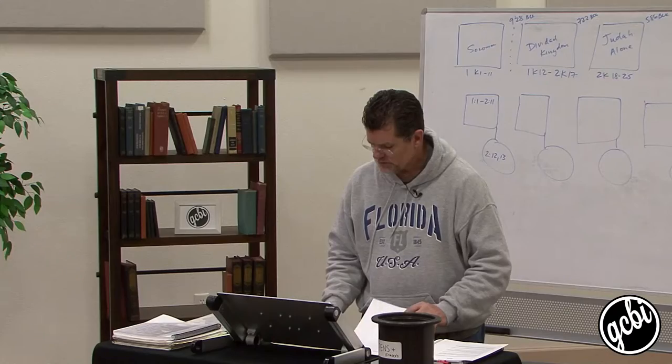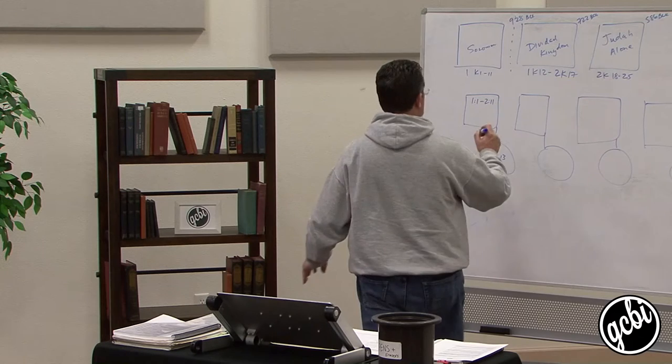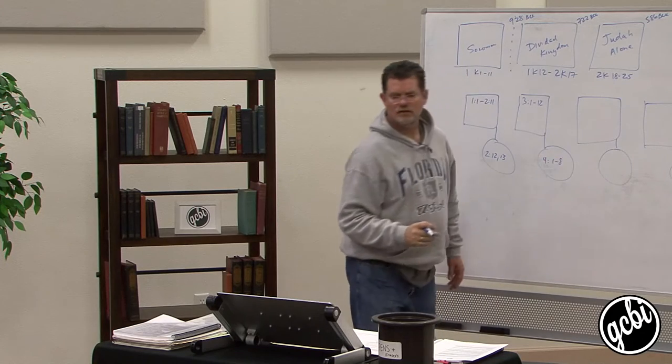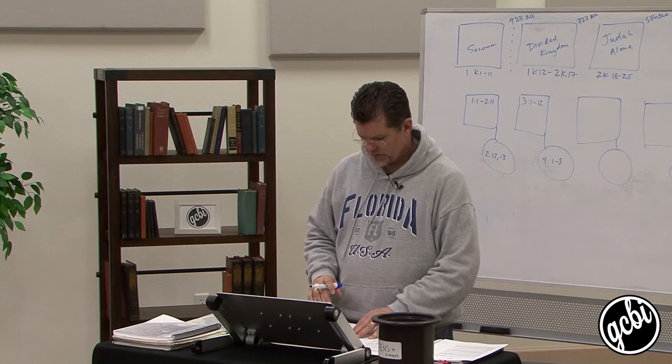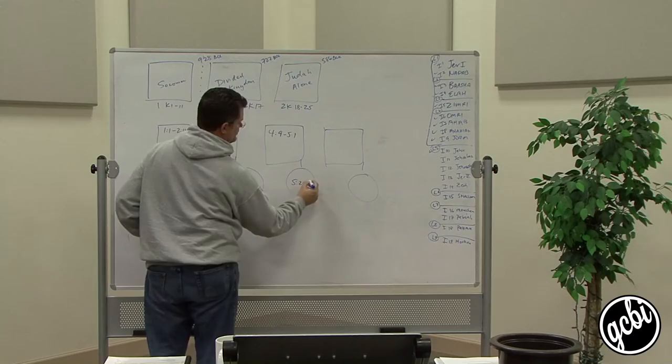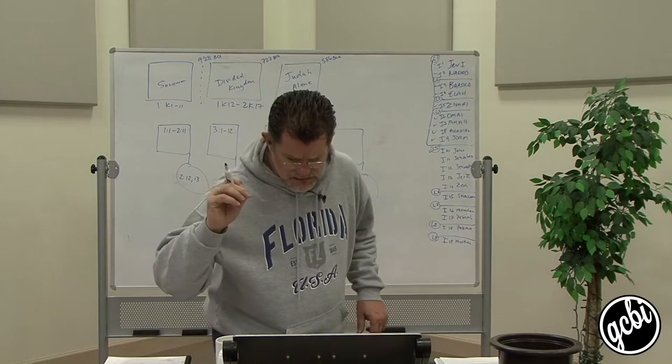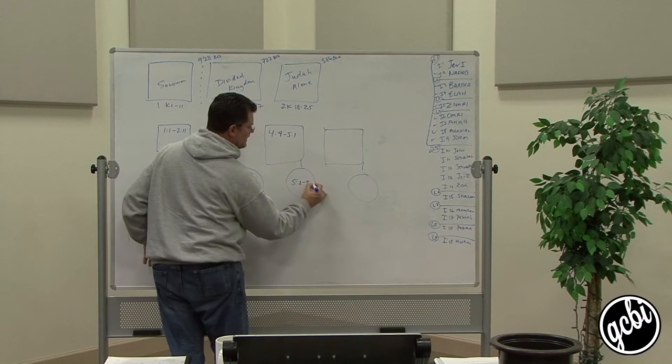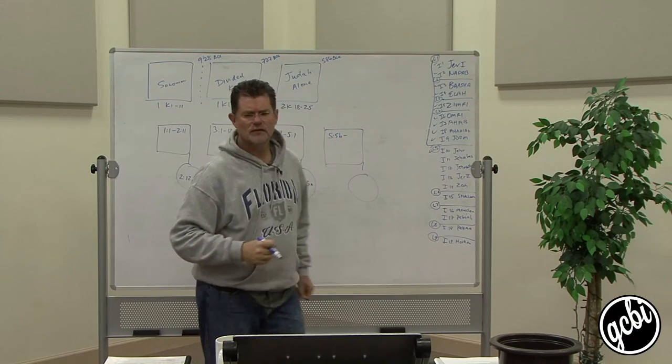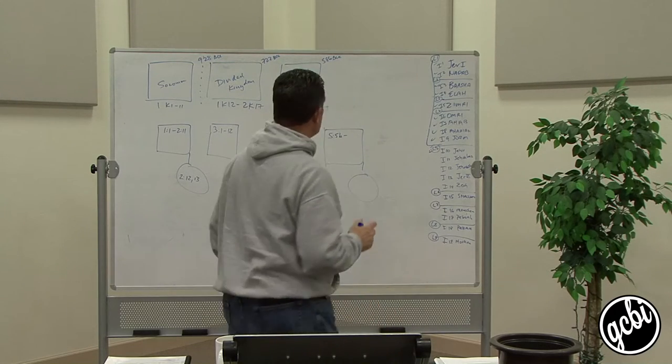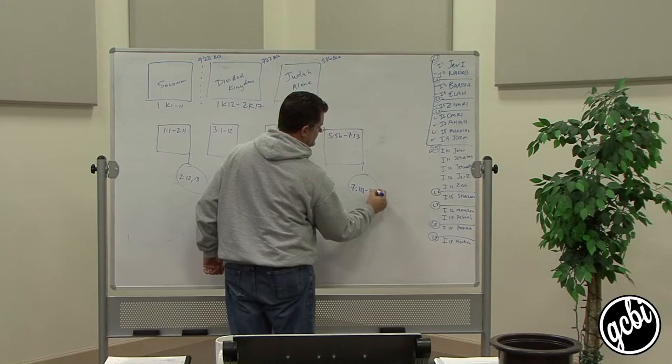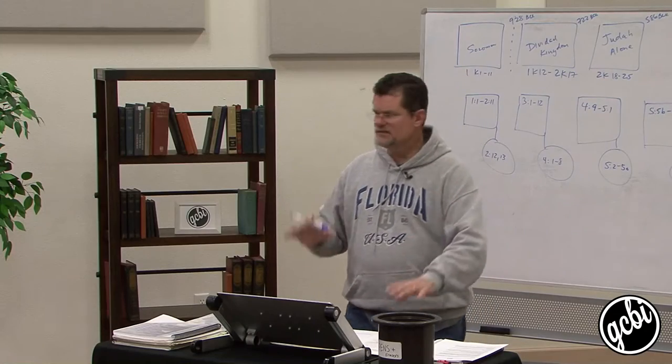The box will represent the oracle of judgment, that is, the problem. The circle will represent the answer, and the entire book is structured this way. For our purposes, probably the smart way to do it is to simply look at 1:1 to 2:11, and then 2:12-13, 3:1 to 12, and 4:1 to 8, 4:9 to 5:1, 5:2 through 7:13, and 7:14 to 20.